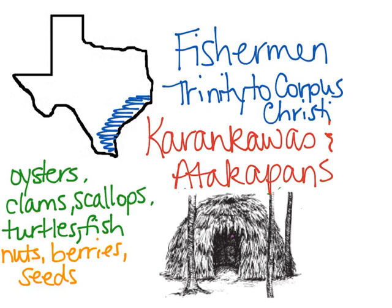The main diet of the fishermen is oysters, clams, scallops, turtles, and fish. But they also gather certain foods like nuts, berries, and seeds to eat.